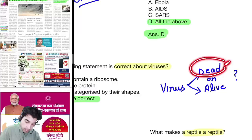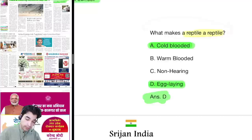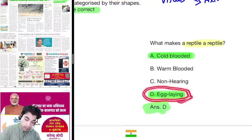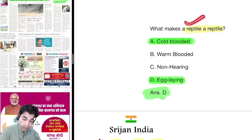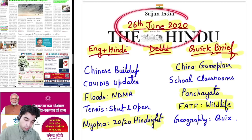Viruses show some properties that put them in the dead category and some in the alive category. For the fifth question — what makes a reptile a reptile — the answer given was D, egg-laying, but some species do give live birth. Cold-blooded seems more correct, so the right answer could be cold-blooded.